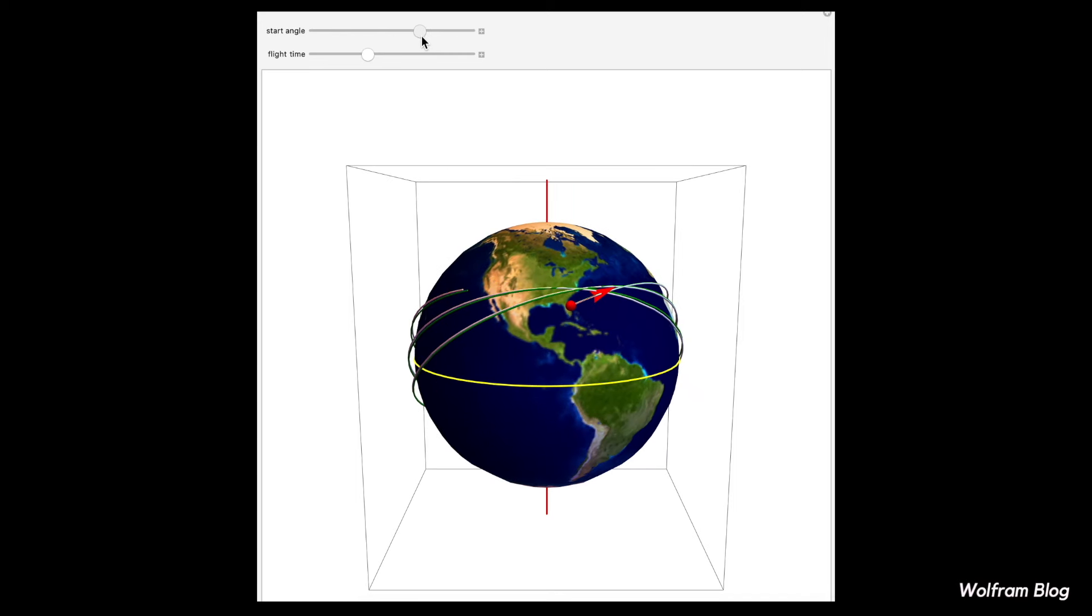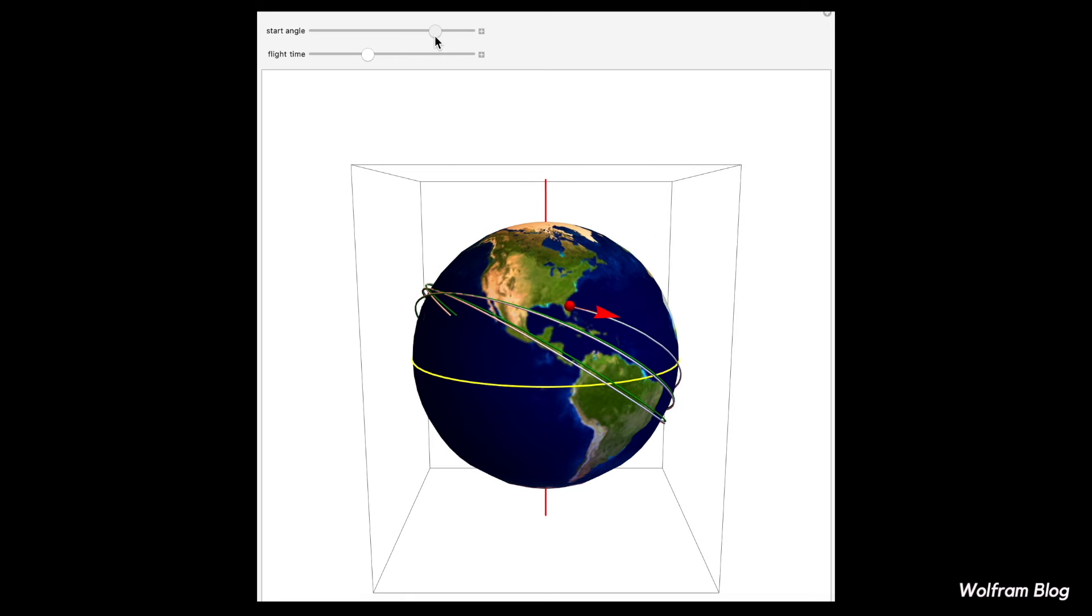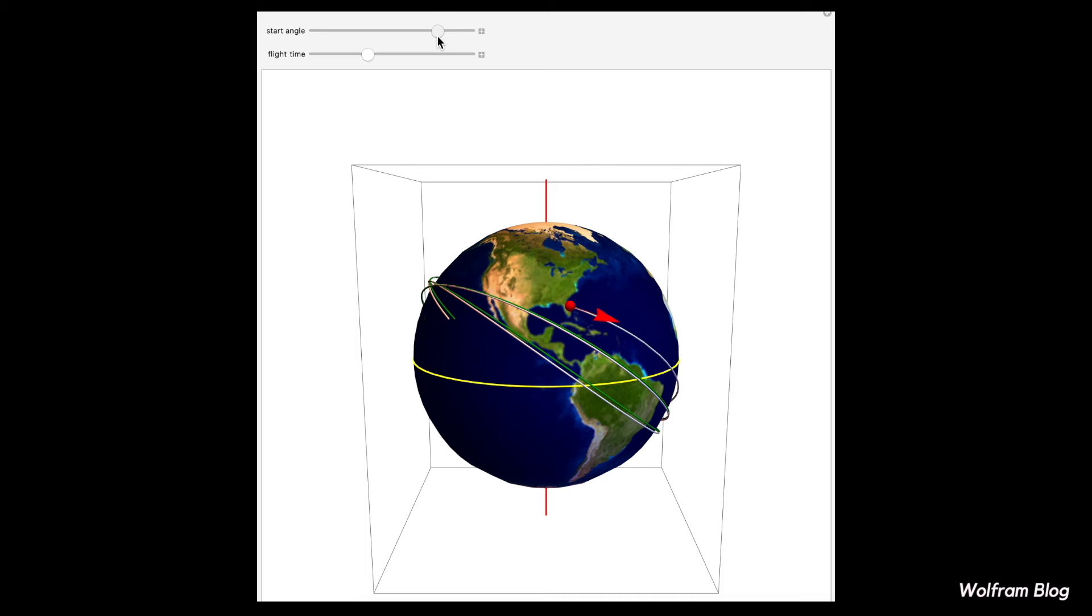So say you want your astronaut to splash down in a certain region on earth so that you can go and retrieve them. Well, the math in this paper is working out what you would need to do at launch and be able to ensure that.